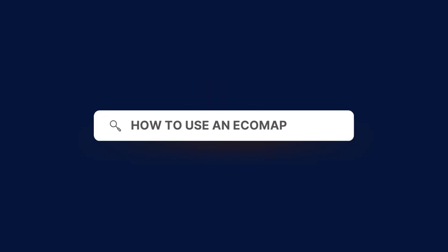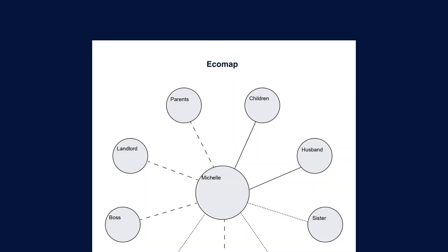Here's how to use an EcoMap. To use an EcoMap, all you have to do is work with the client. List relationships that are important to the client and that may be affecting their mental health. You can also list habits or behaviours of these individuals to gain a more comprehensive picture.